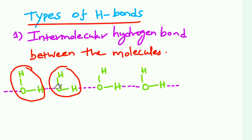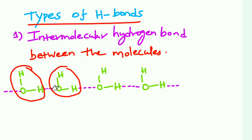The electronegative atom is oxygen. The two electronegative atoms form a hydrogen bond. If you look at the most important point: in the blue dotted line, this is the hydrogen bond. And this is the covalent bond. So this is the intermolecular hydrogen bond.